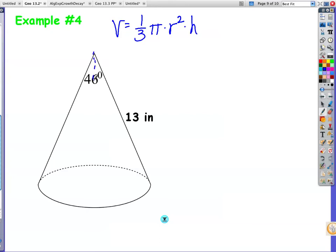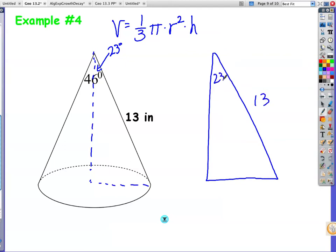So how am I going to do this? Let's draw in our height, let's draw in what we need, and I'm going to draw in the radius. I cut this in half, so this angle is now 23 degrees. This dotted line right here is my height, this is my radius. So I'm going to draw over here a little triangle: 13, 23 degrees. And how am I going to find anything else?